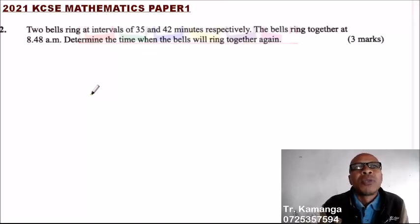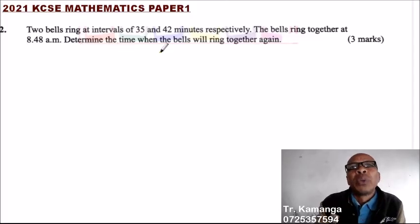This is question number two. Two bells ring at intervals of 35 minutes and 42 minutes respectively. The bells ring together at 8:48 AM. Determine the time when the bells will ring together.